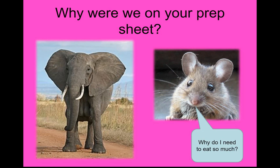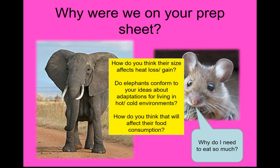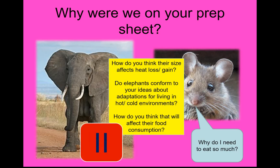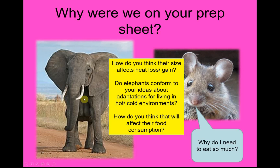Looking at these pictures: how does body size affect heat loss? Do elephants conform to ideas about adaptations for living in hot or cold environments, and how does that affect food consumption? Elephants are large and round — a small surface area to volume ratio — but they live in hot places. So how have they evolved? They have big ears which act as radiators, and they don't have much fur, allowing more heat loss despite their shape being similar to a polar bear's.